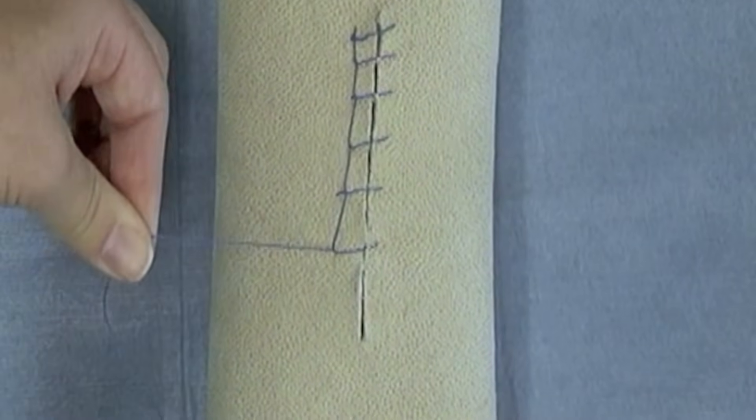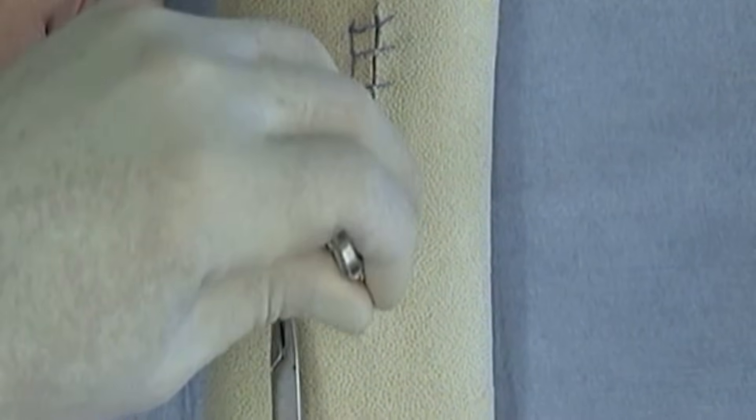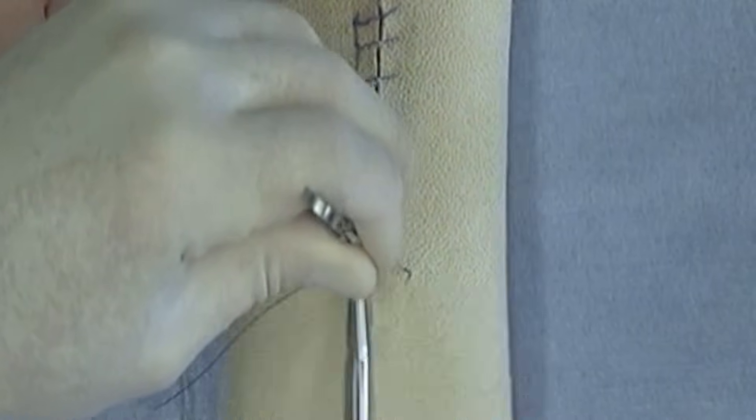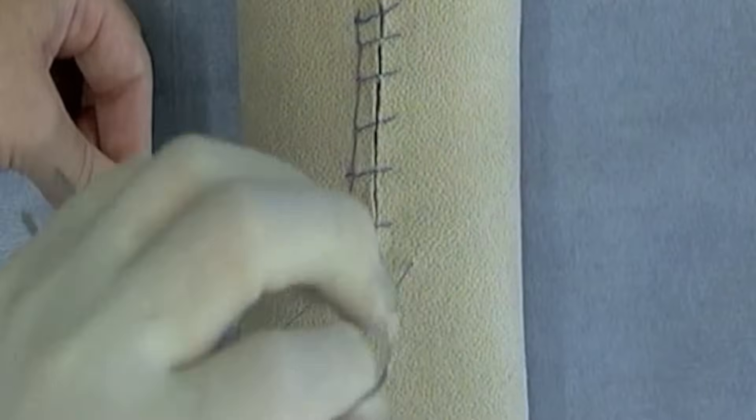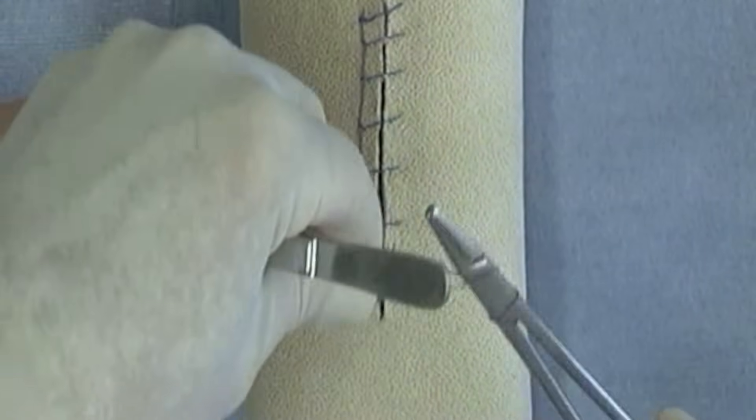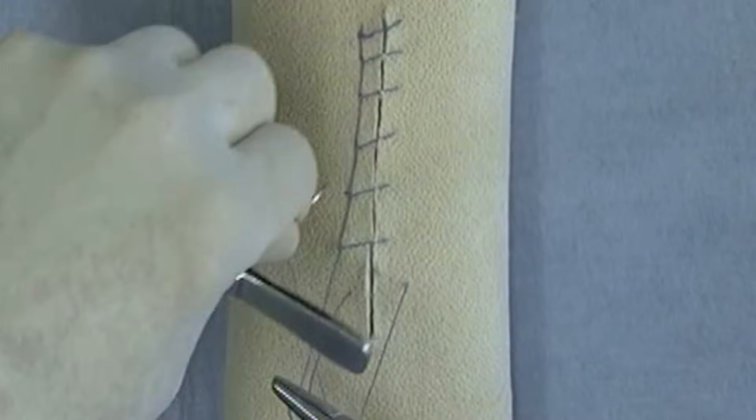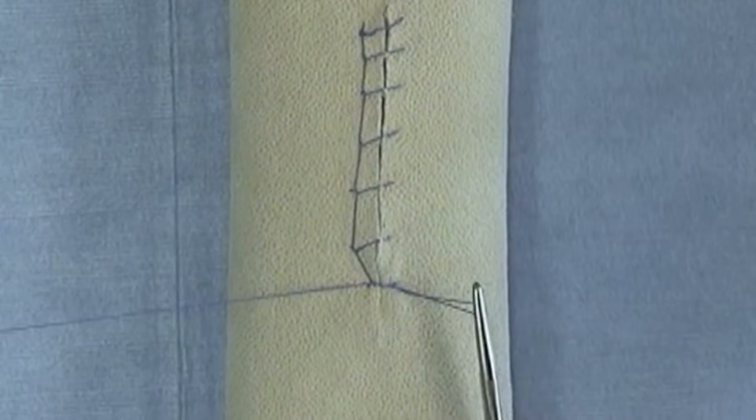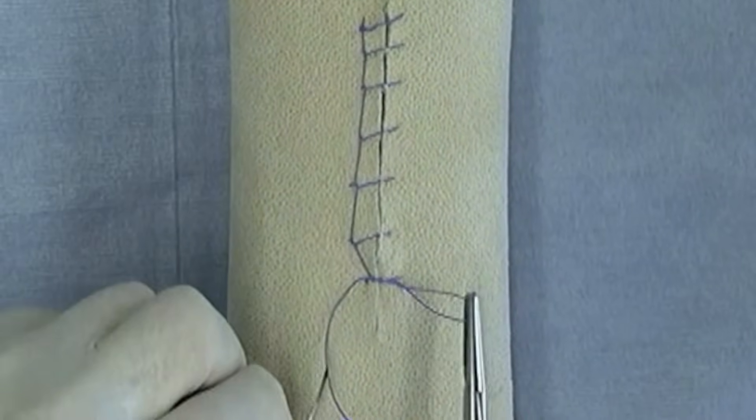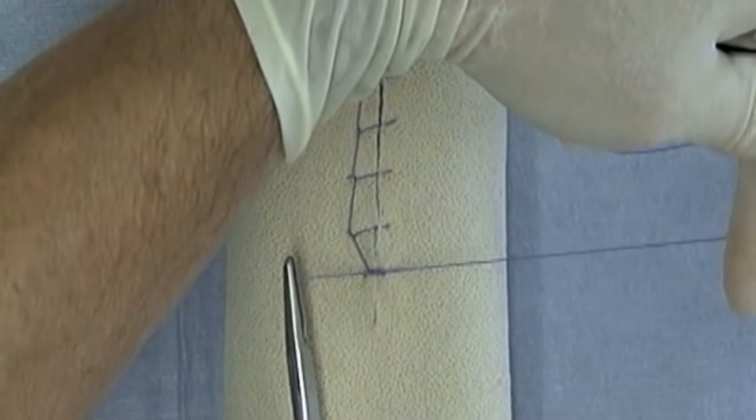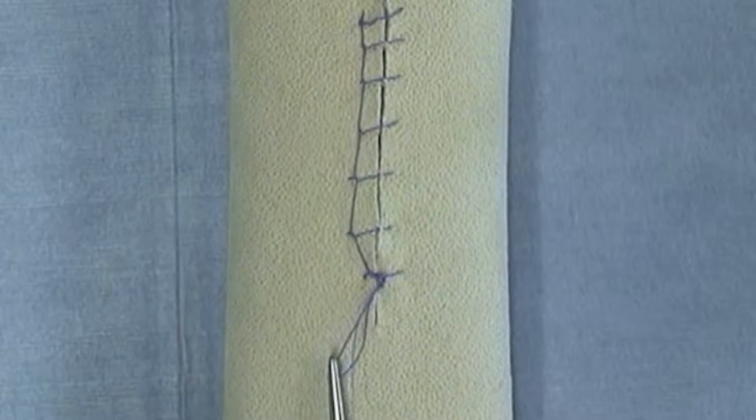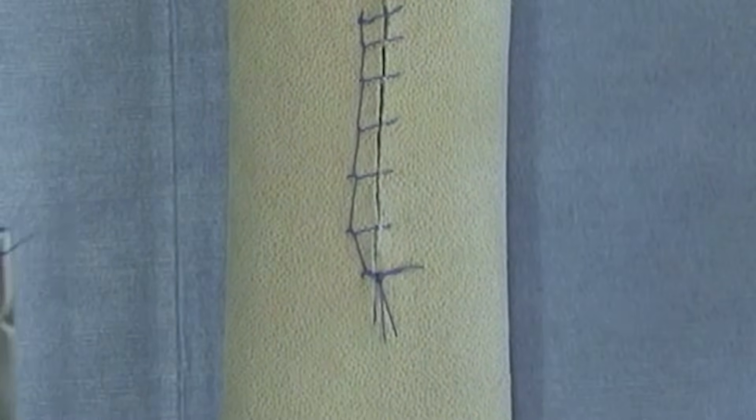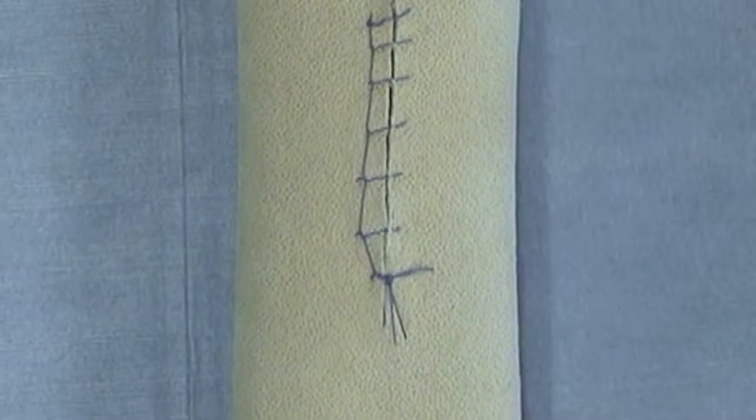And to end this we're going to end it in a backhand suture bite and we're going to tie back to the loop, thus finishing the forward interlocking pattern.